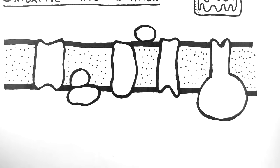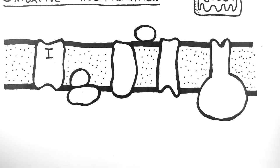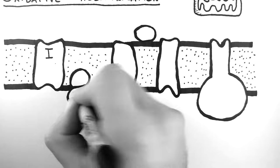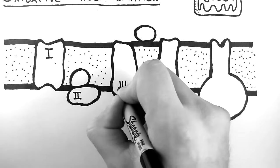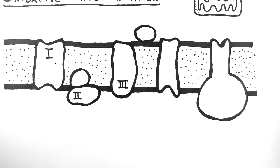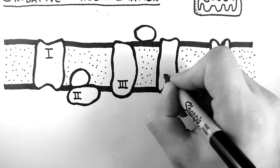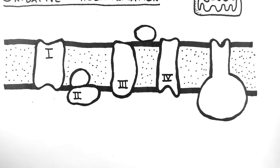So here is the membrane, and within it are a bunch of protein complexes. They are known as complex 1 or NADH dehydrogenase, complex 2 or succinate dehydrogenase, complex 3 or cytochrome C reductase, and complex 4 or cytochrome C oxidase. These are the major protein complexes of the electron transport chain.